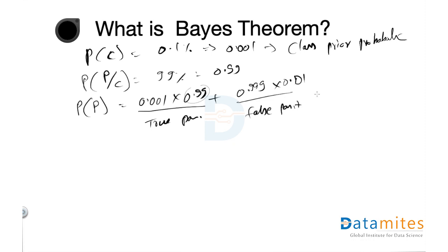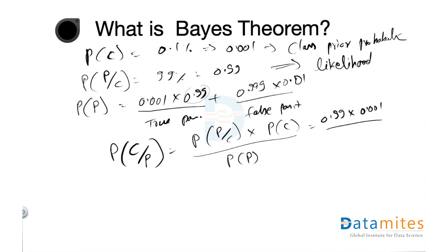As per Bayes theorem, the probability of Mr. Bob having cancer given that the test has given a positive result is the probability of test giving a positive result when Bob actually has cancer (which is called likelihood), multiplied by class prior probability, divided by probability of test giving positive result, which is 0.99 × 0.001 divided by this whole thing, so 0.001 × 0.99 + 0.999 × 0.01. If you do this math, you get 0.0999, which is 9.9%, approximately 10 percent, exactly same as what we calculated.